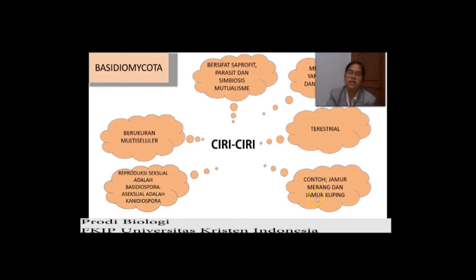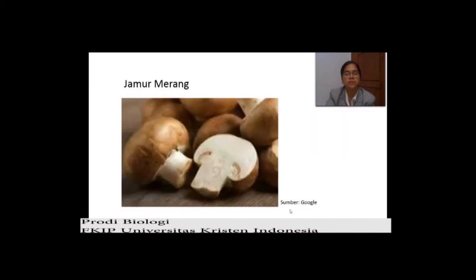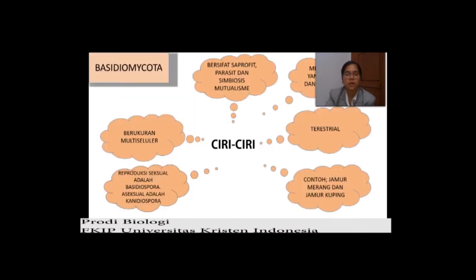Contohnya adalah jamur merang dan jamur kuping. Ini dia jamur merang — dia seperti payung. Kalau jamur kuping, dia bentuknya memang seperti kuping. Nanti kita akan lihat foto atau gambar dari jamur kuping.